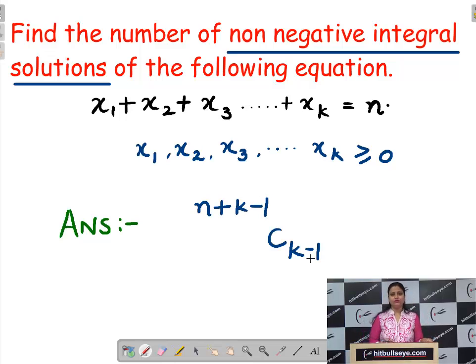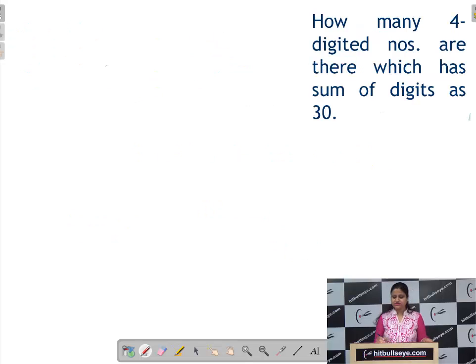Now, we will make use of this formula in our question. Question was, how many 4-digit numbers are there which has sum of digits as 30? So if we take 4 places, at every place, 9 can be the maximum possible digit. But if we take 9 at every place, the sum of digits will be 36. But we want sum of digits to be 30. It means we want to drop 6 out of this 36.